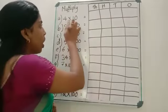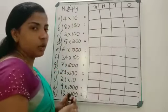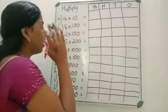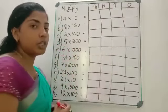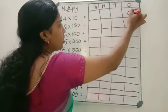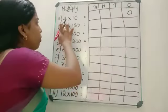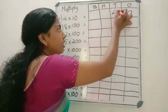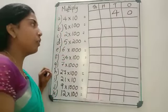See how many zeros are here — only one zero. We have already studied that while writing, we start from the 1's place. So put that zero in the 1's place, and then 4 into 1 is 4 — write that number in the next place. So the answer is 40.